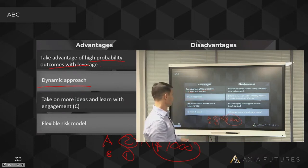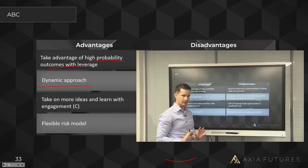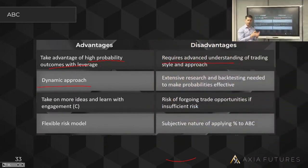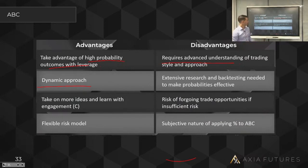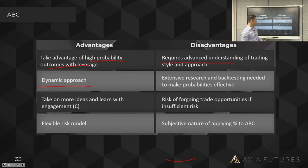The ABC strategy does require advanced understanding — it's better suited for traders who know what their best trades are and have some edge. It requires a bit of backtesting to know which plays are high probability and which aren't. There is a risk of missing trade opportunities if you've used up your risk — if you've taken two A trades, your risk may be gone for the day. Also, the A, B, C percentages — 50%, 25%, 10% — are not fixed; adjust them based on your personality, style, and objectives.